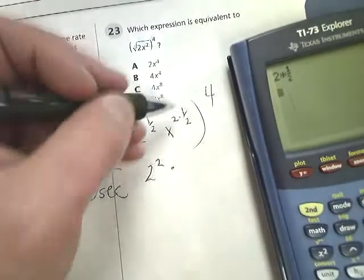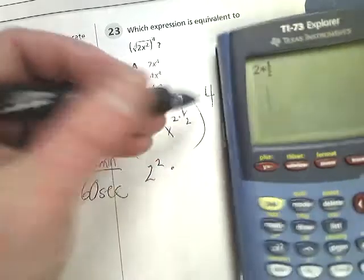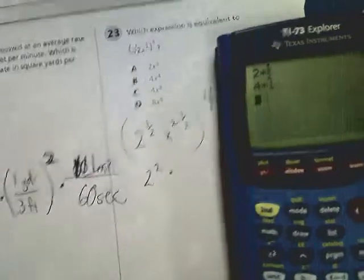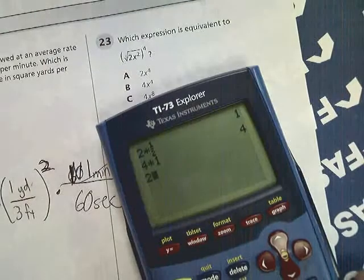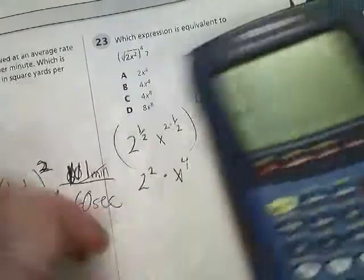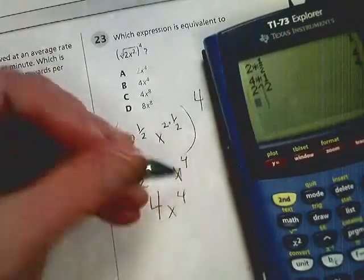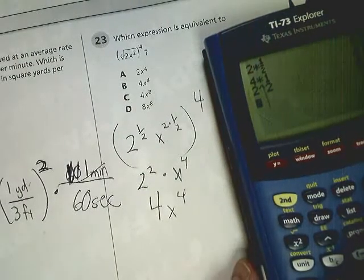So this is x to the first power, and x to the first power times 4. Four times 1 is 4, so it's x to the fourth. Now I know that 2 to the second power is 4. I get 4x to the fourth. So the answer to number 23 is B.